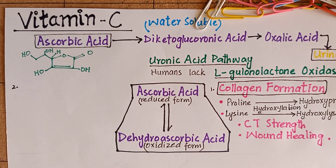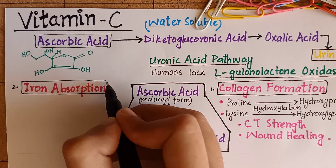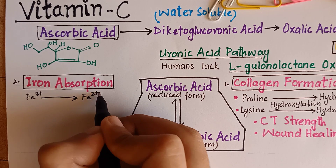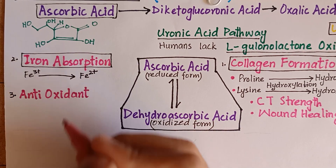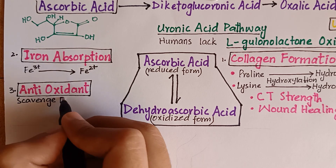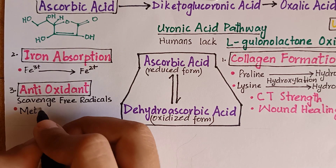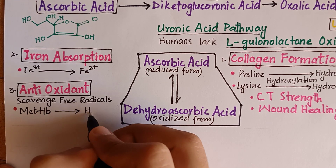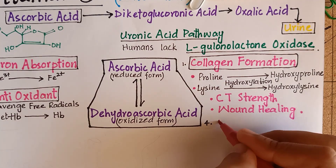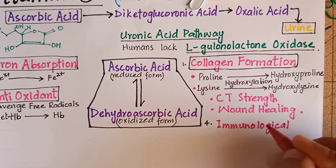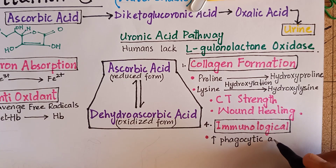Vitamin C enhances iron absorption from the gut by keeping iron in the ferrous form. It is a scavenger of free radicals and acts as an antioxidant. It is useful in the conversion of methemoglobin to hemoglobin. Vitamin C also has immunological functions because it enhances the phagocytic action of leukocytes.